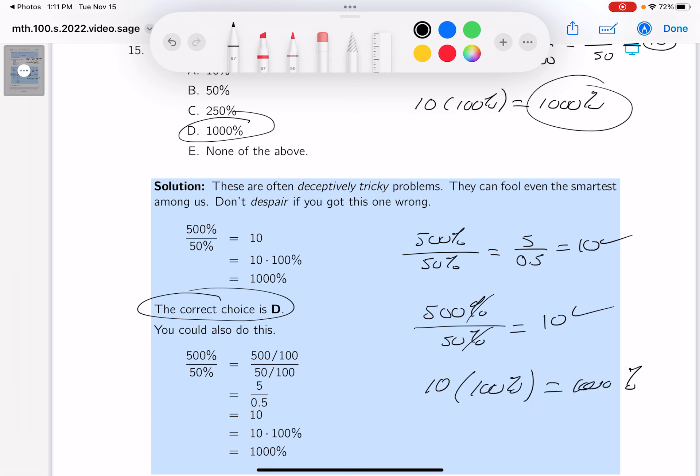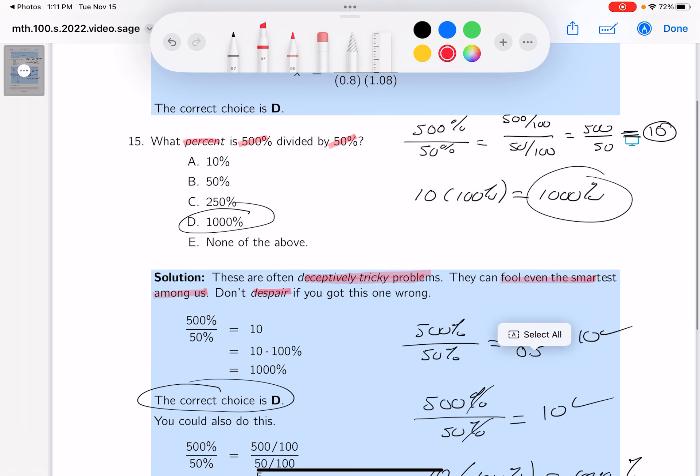I consider this to be a deceptively tricky problem. It can fool even the smartest among us. Don't despair if you got it wrong—I think a lot of students would select A as the correct answer, but it's not the correct answer. D is the correct answer. Thank you so much for paying attention.